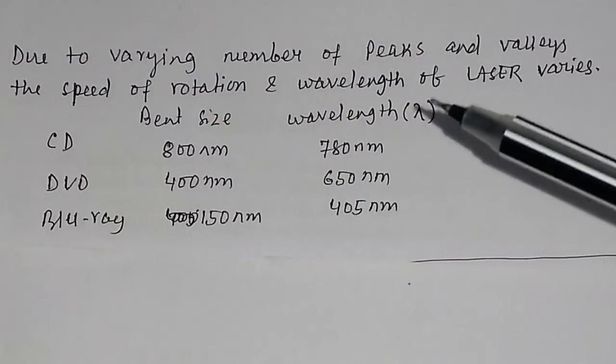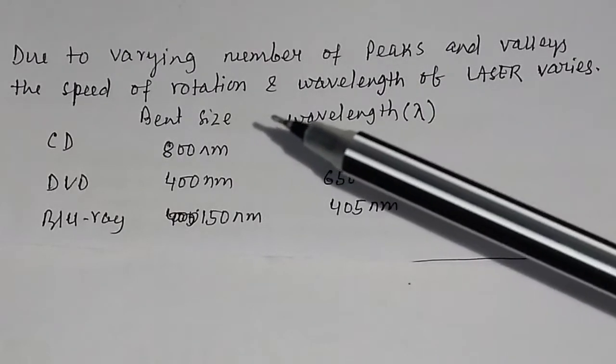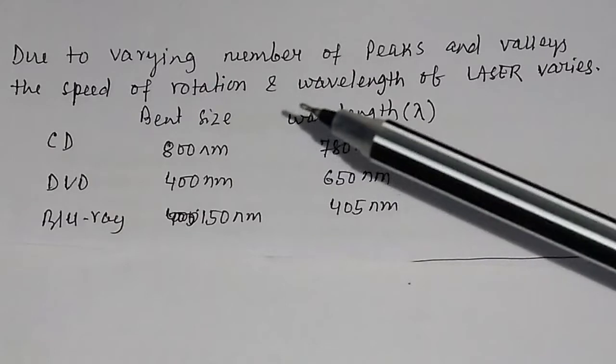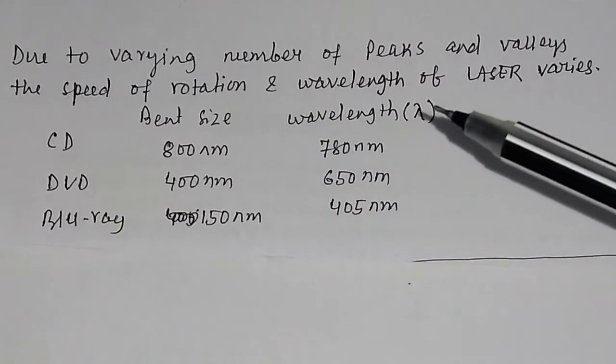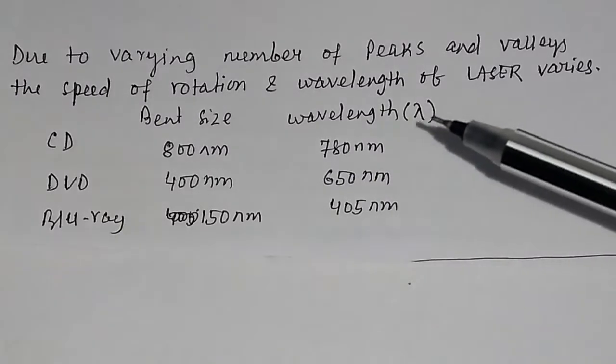The number of peaks and valleys in different disks are not the same. That is why the speed of rotation and the wavelength of the laser varies.